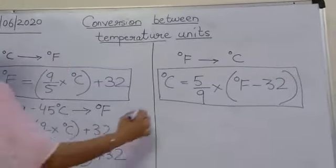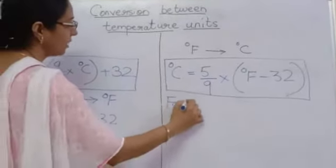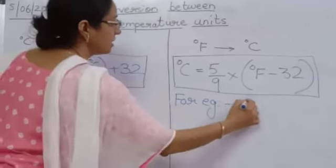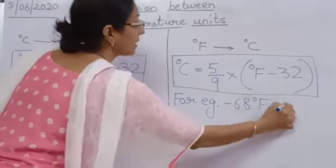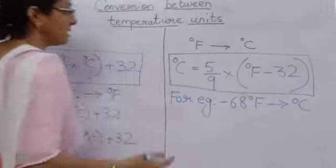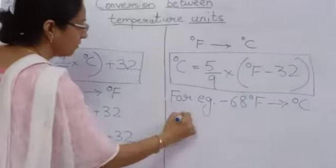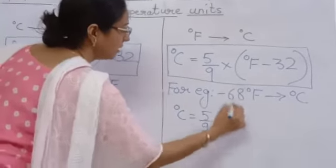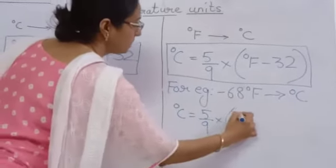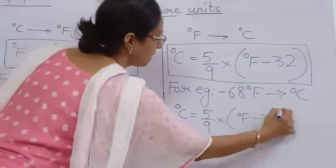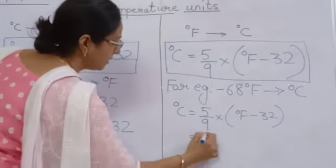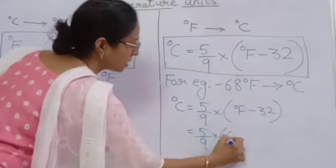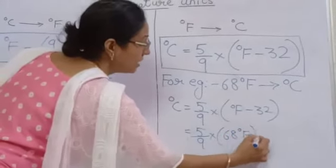Now let us take an example. For example, we have to change 68 degree Fahrenheit to degree Celsius. How will we do it? First, we will write the formula: degree Fahrenheit minus 32. Then, instead of degree Fahrenheit, we will be putting the value which has to be changed.